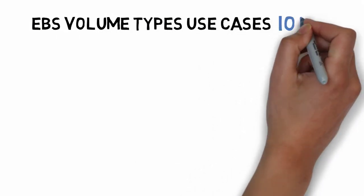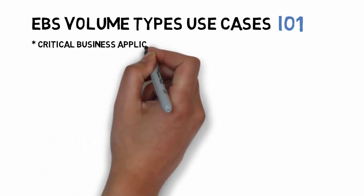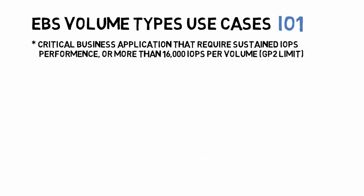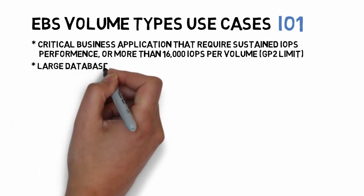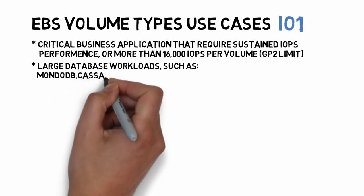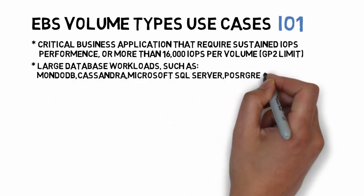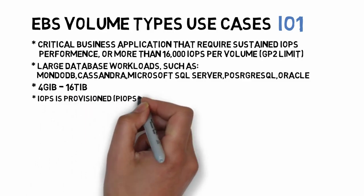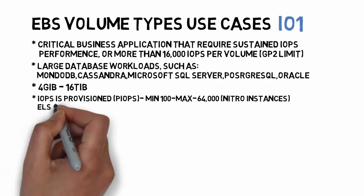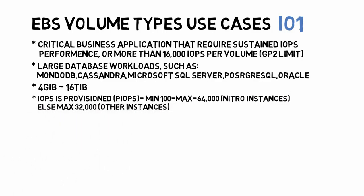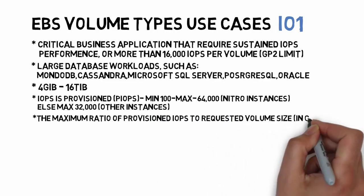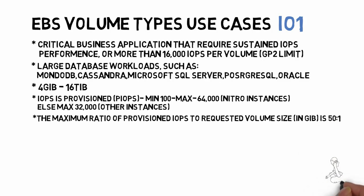EBS volume types use cases for IO1 and IO2. These are used for critical applications that require sustained IOPS performance above 16,000 IOPS per volume — beyond the GP2 limit. Large database workloads such as MongoDB, Cassandra, Microsoft SQL Server, PostgreSQL, and Oracle use this type. The minimum volume size is 4 GB and maximum is 16 TB. IOPS is called Provisioned IOPS, with a minimum of 100 and a maximum of 64,000 for Nitro-based instances, or 32,000 for other instances. The minimum ratio of provisioned IOPS to volume size is 50 IOPS per 1 GB.